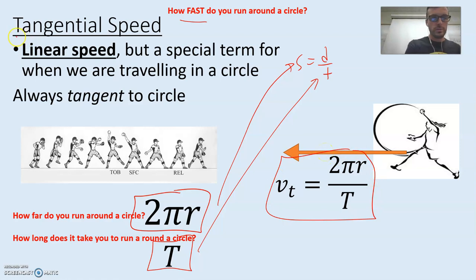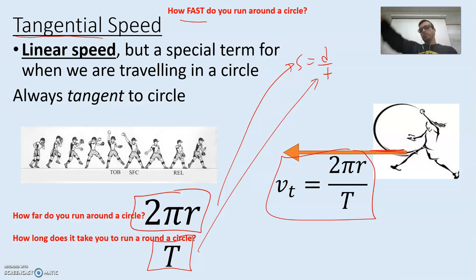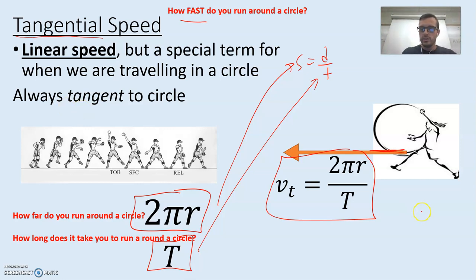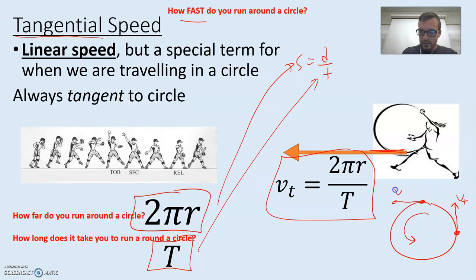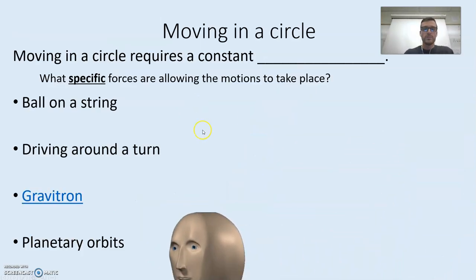The word tangential comes from the root word tangent — a straight line along the edge of a circle. Think of a softball pitcher: they come around the circle, and when they release the ball, it flies tangent. When we say tangential speed is always tangent to a circle, that means if you're spinning around in a circle, your velocity v_T at any point along the edge is always pointing tangent at that moment. These velocity vectors are always tangent along the edge of the circle — that's what we mean by tangential speed or tangential velocity.